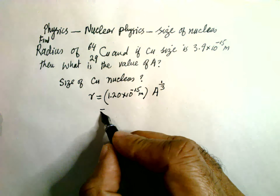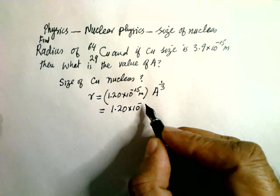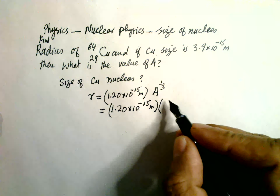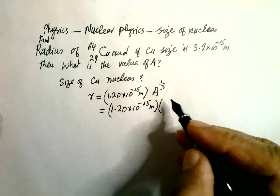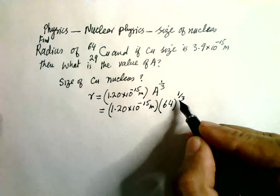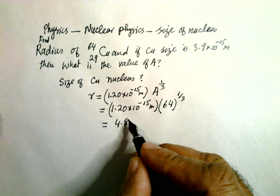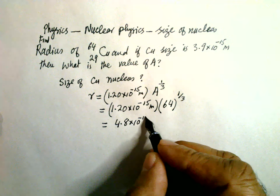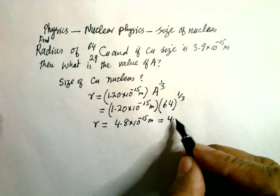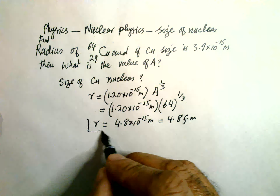So this is equal to 1.20 × 10⁻¹⁵, with atomic mass 64 raised to power one-third, and this is equal to 4.8 × 10⁻¹⁵ meter, which is R, or which is equal to 4.8 Fermi.